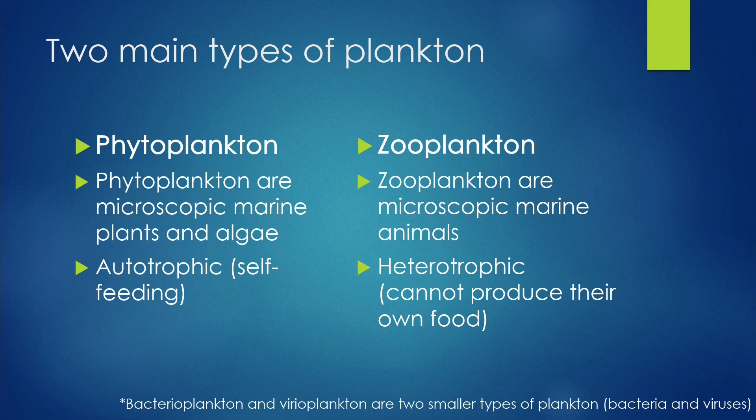Phytoplankton are plants and zooplankton are animals. Phyto meaning plant and plankton meaning drifter. Phytoplankton are autotrophic, or self-feeding, meaning they use energy from the sun for photosynthesis.